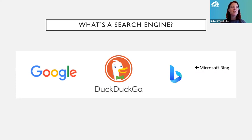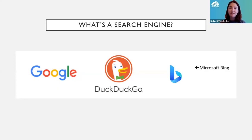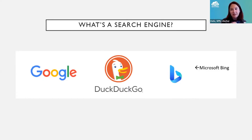Each of these search engines has its own formula — its own secret sauce — for figuring out: if this person typed in these keywords, these are the web pages they should be offered a chance to look at. They call that the search algorithm. Those are secret — each search engine company keeps their algorithm a secret, and they change and update it sometimes. If someone knew the algorithm, they could make their website the top result for any search, so that's why search engine companies keep it close to the vest.